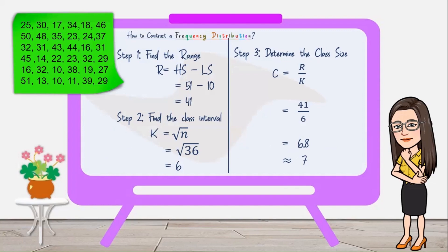Step 1: Find the range. To find the range, we use the formula R equals HS minus LS. R stands for range, HS stands for highest score, and LS stands for lowest score. Examine the scores — the highest score is 51 and the lowest score is 10. Therefore, we subtract 51 by 10, and the difference is 41.